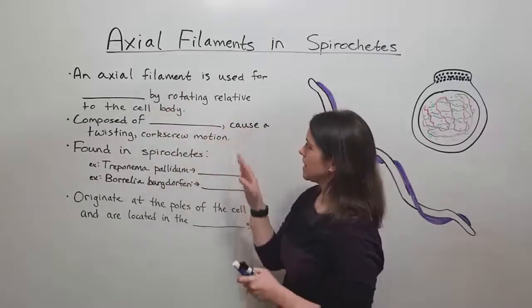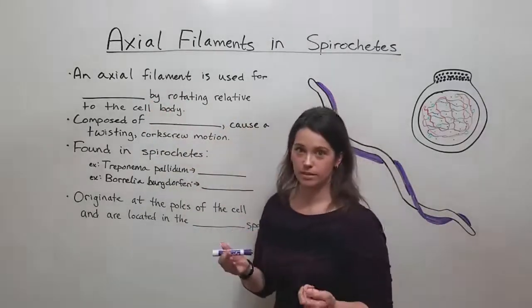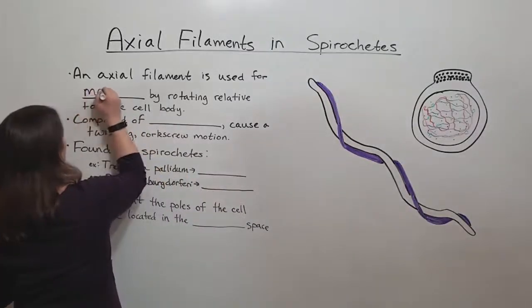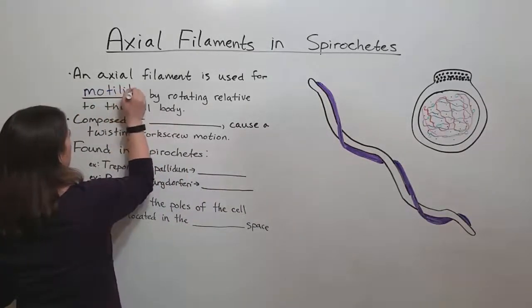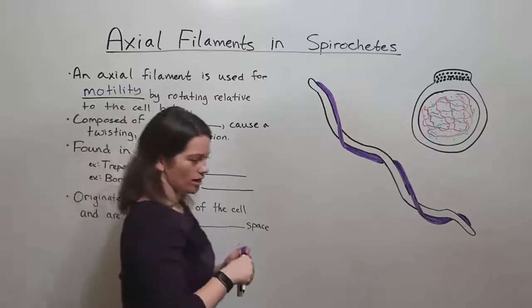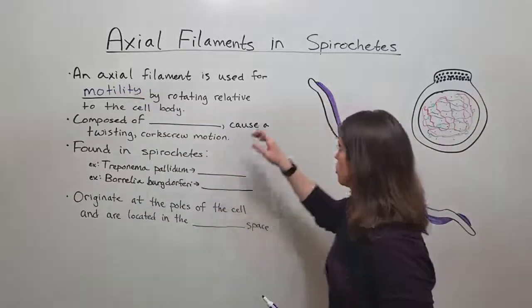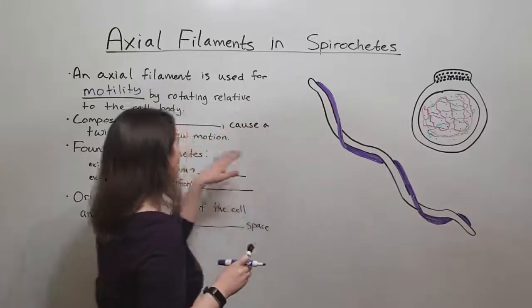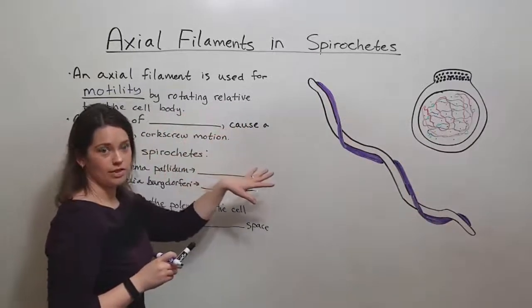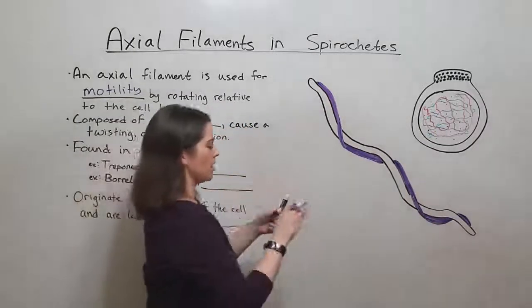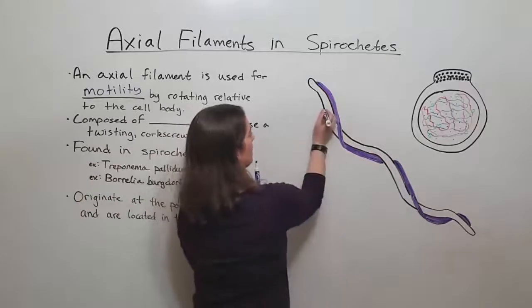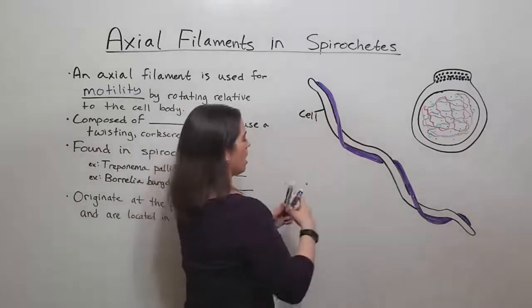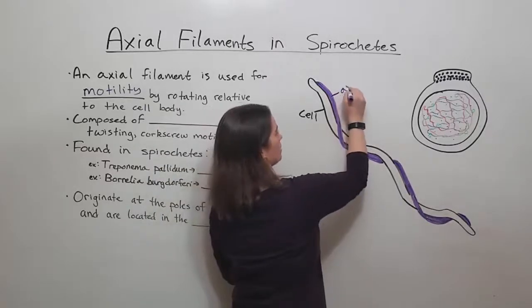An axial filament is used for movement, so its function is in motility. The way it works is it is this long structure, shown here in purple, that actually rotates relative to the cell body. So here we've got the cell in black and we've got the axial filament in purple.